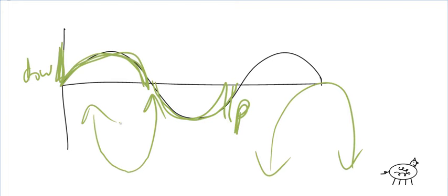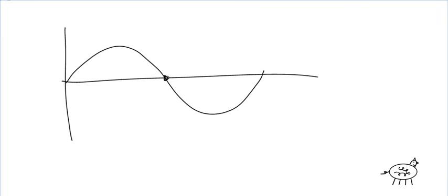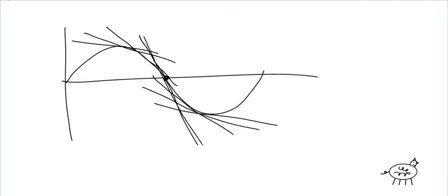You really need to be able to identify concavity. Here's another thing about inflection points — these inflection points are the steepest part of the graph, the steepest slope. This is the steepest part of the slope wherever that is. Before and after the inflection point, it gets less steep. So the inflection points are the steepest part of the slope.